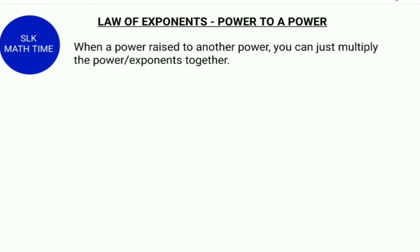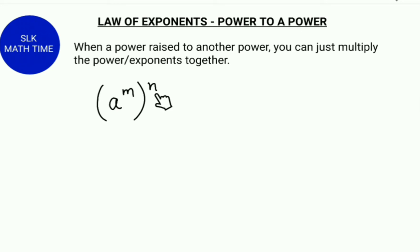Let's see an example: a power m, the whole power n. So to find the new power, we multiply the two powers together. We keep the base the same, so we write a, and then multiply the powers m and n. So it's a power m into n.